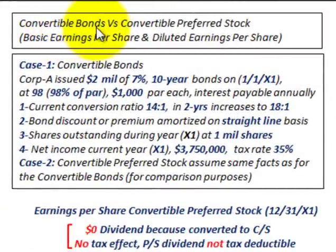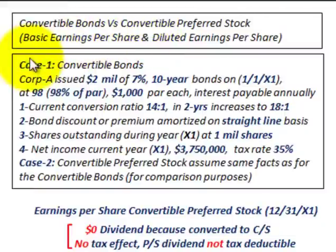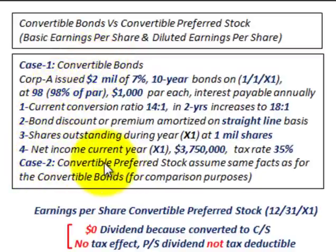We're going to be looking at convertible bonds versus convertible preferred stock, and we're going to be calculating the basic earnings per share versus the diluted earnings per share for both. We'll look at two cases: case one with convertible bonds and case two with convertible preferred stock.